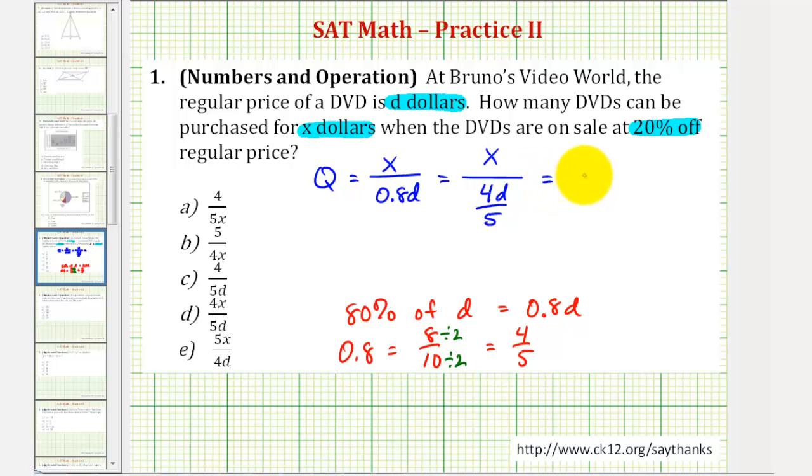So this is equivalent to X times the reciprocal of four D over five, which would be five over four D.